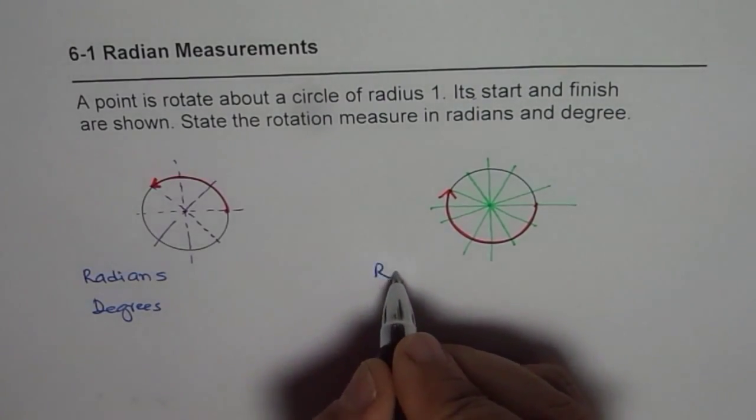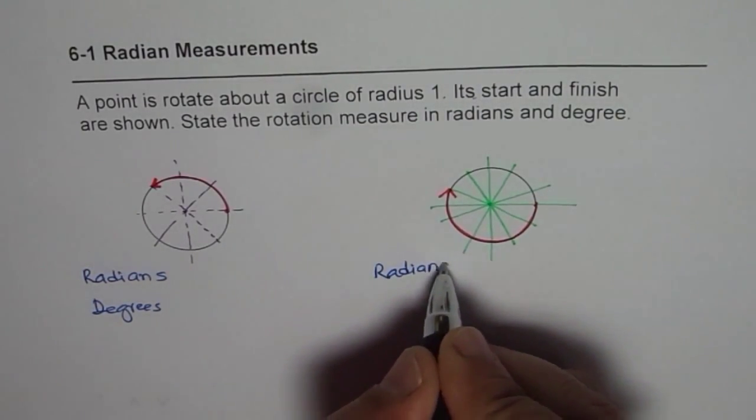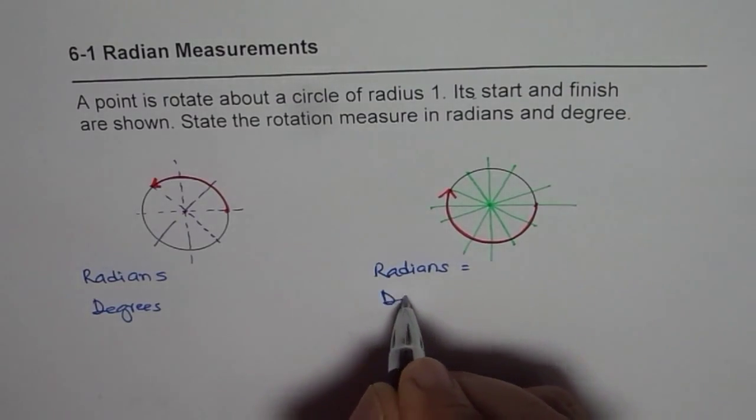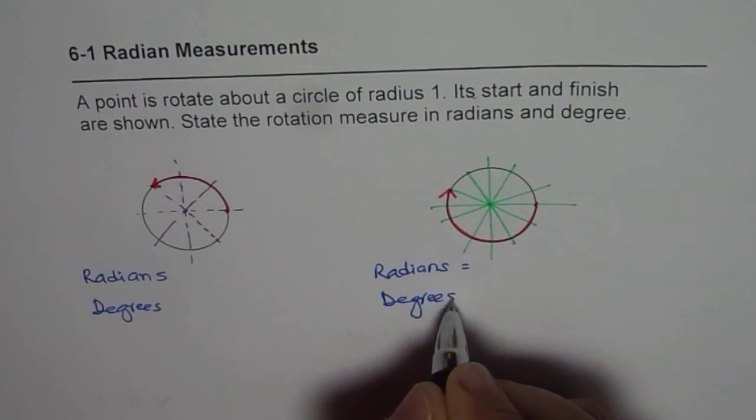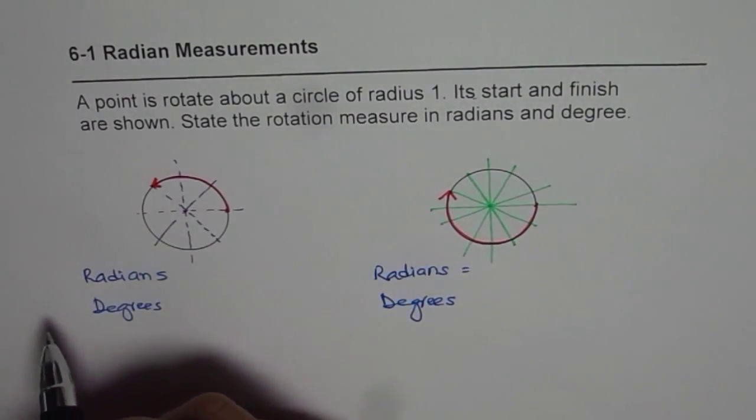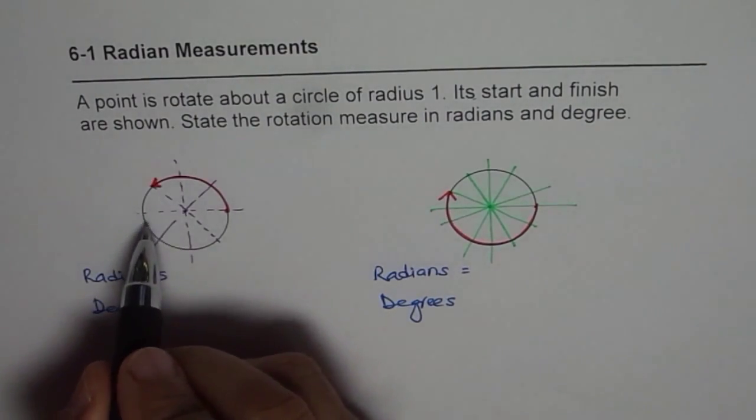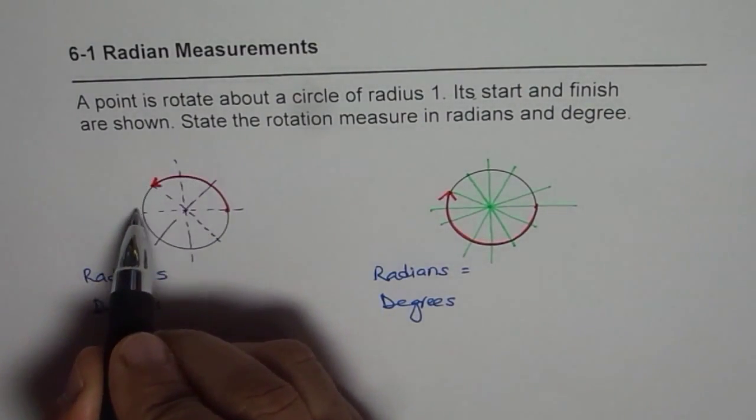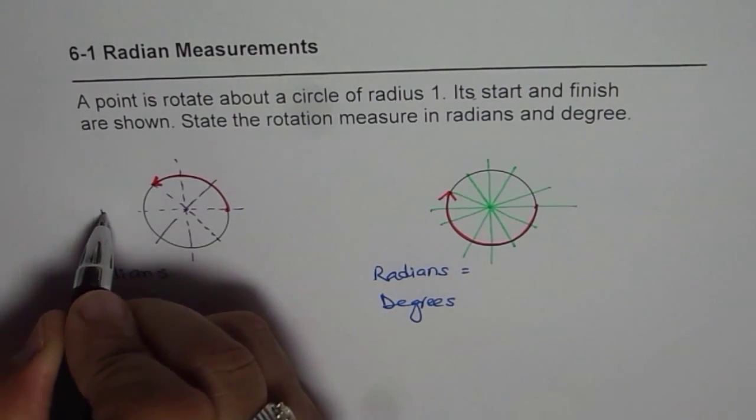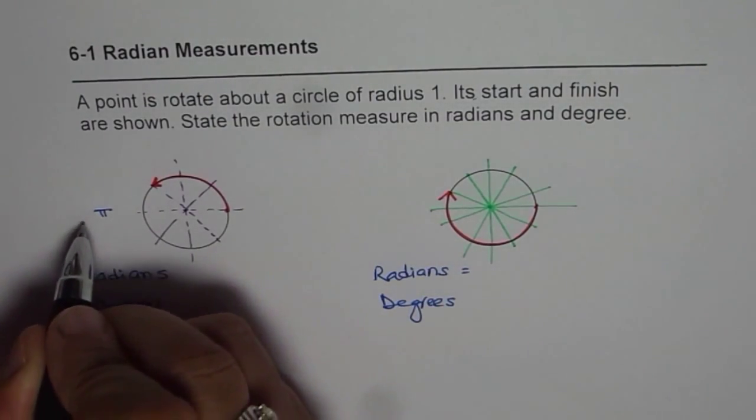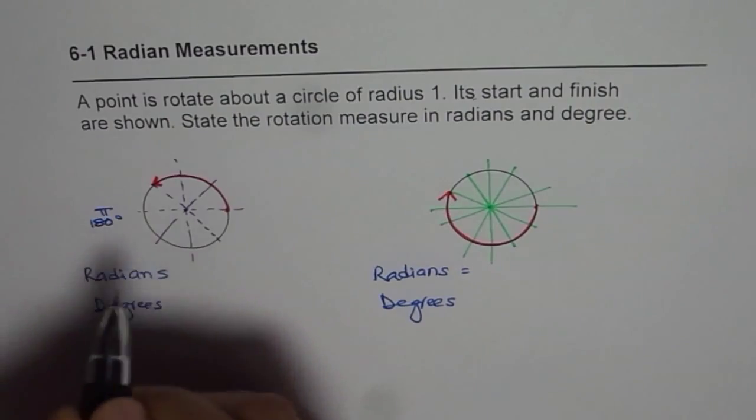I hope you got the answer by now, radians and in degrees. Okay, let's begin with this. Let's start with radians. Now, half of the circle is 180 degrees or pi radians, correct? Or you can say 180 degrees, half of the circle.